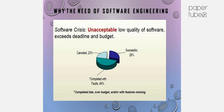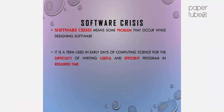When we start developing a software product, the successful completion percentage is only 28%. Software engineering helps us develop successful software products. This is the problem known as the software crisis.